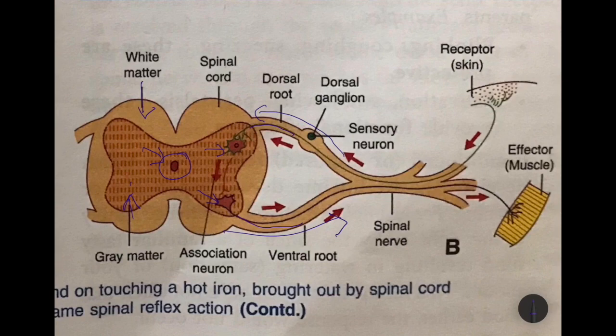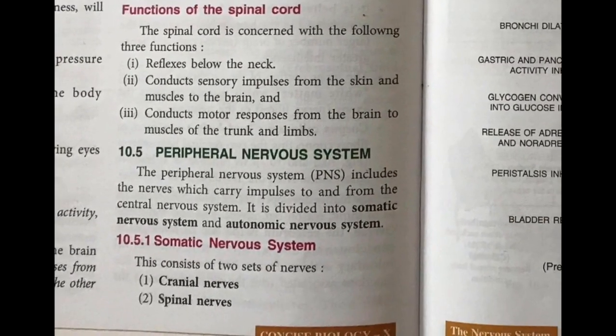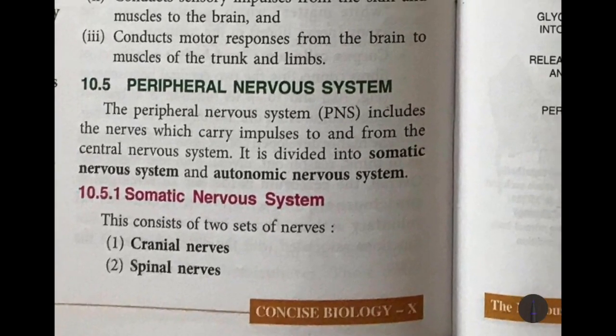The functions of the spinal cord are as follows: first, it is concerned with reflexes below the neck; second, it conducts sensory impulses from the skin and muscles to the brain; and third, it conducts motor responses from the brain to the muscles of the trunk and limbs.